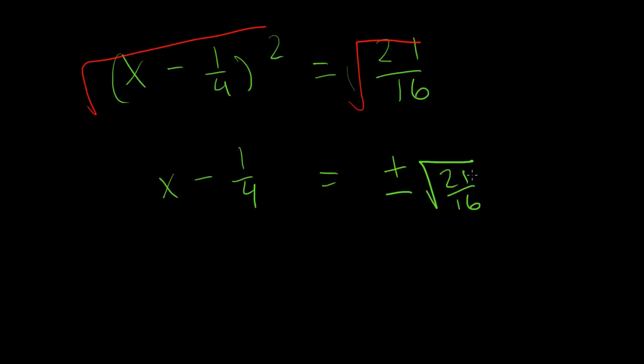Plus or minus the square root of 21/16. Now, we could obviously reduce this if we wanted to. But for the purpose of the video, it's not really that necessary. So, just continue this if I add the 1/4 to both sides. Because again, I'm trying to isolate the x. Then I get x = 1/4 ± √(21/16).